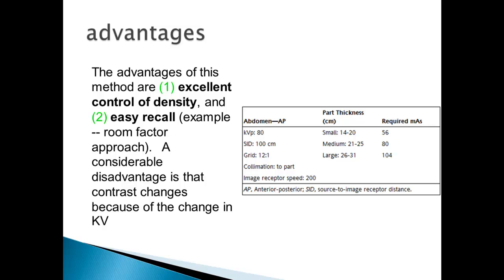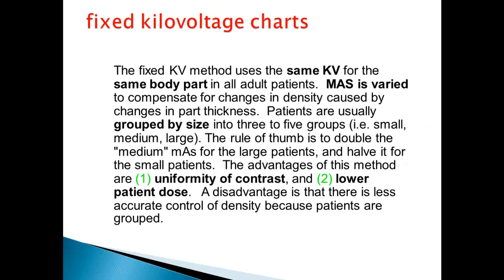A considerable disadvantage however is that because the KV is fixed, your contrast will be fixed at a certain level and it will be very difficult to change that. The fixed KV method uses the same KV but the mAs will be varied to compensate for any changes in density caused by different part thickness.